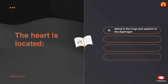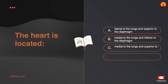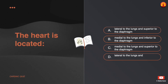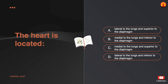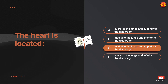The heart is located: A. Lateral to the lungs and superior to the diaphragm. B. Medial to the lungs and inferior to the diaphragm. C. Medial to the lungs and superior to the diaphragm. D. Lateral to the lungs and inferior to the diaphragm. The correct answer is: medial to the lungs and superior to the diaphragm.